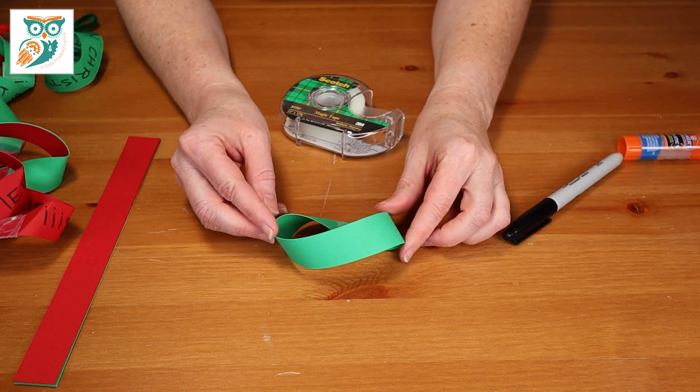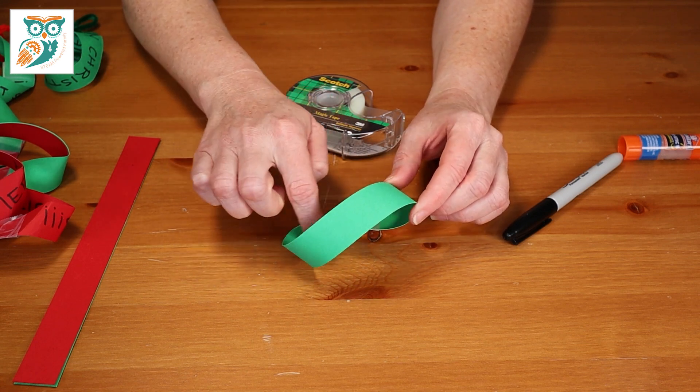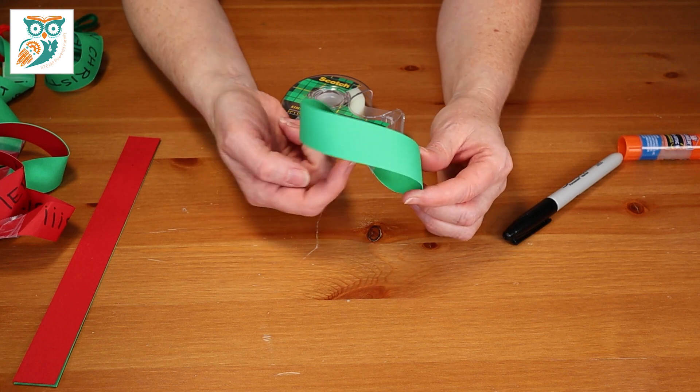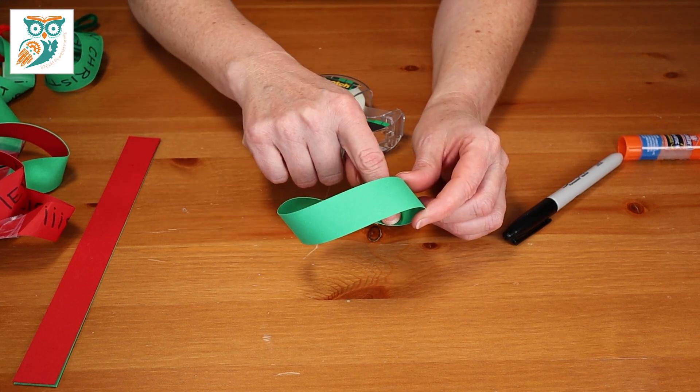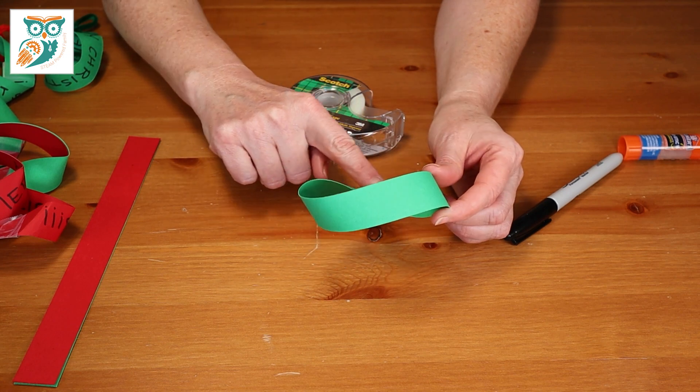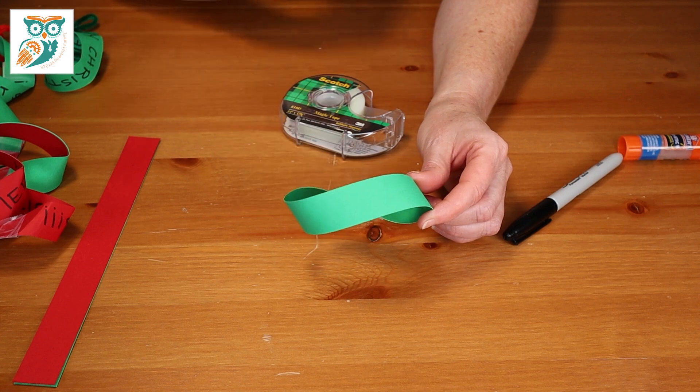And so the fascinating thing with a Mobius Strip is that it only has one side. So if you trace your finger all the way along here, you never have to lift your finger. It's an infinite loop. It also only has one edge. So same thing. If you were to trace your finger along the edges, you would end up touching the edges all the way around without ever having to lift your finger.